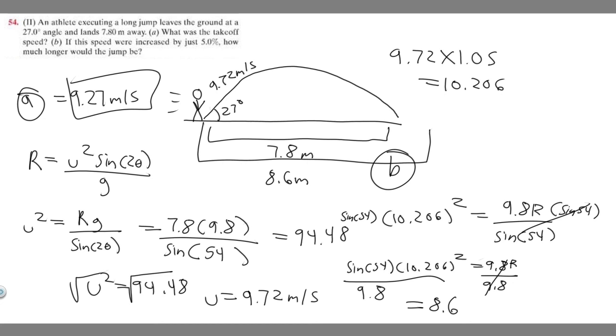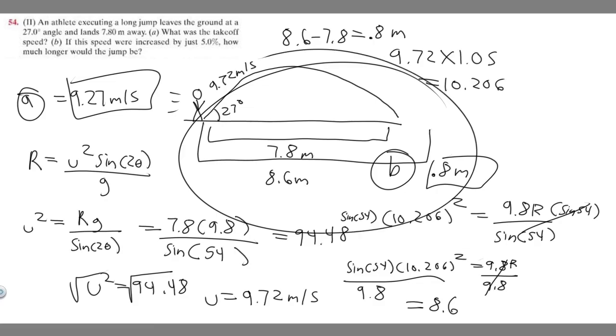But they're asking how much longer the jump would be. They're not asking for the distance with 5%, they're asking for the change in distance. So we've got to subtract our old distance from our new distance. 8.6 minus 7.8 equals 0.8. Keep in mind we're using meters, so 0.8 meters. This is your answer to B. That's how you solve this problem.